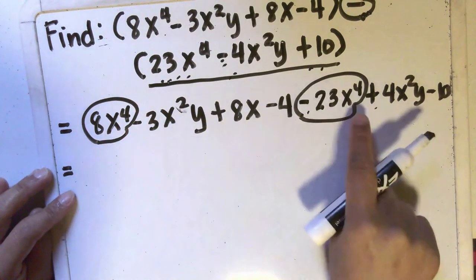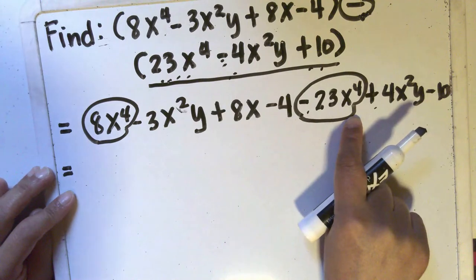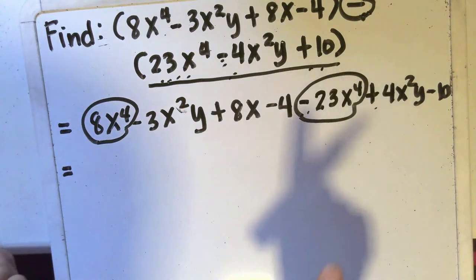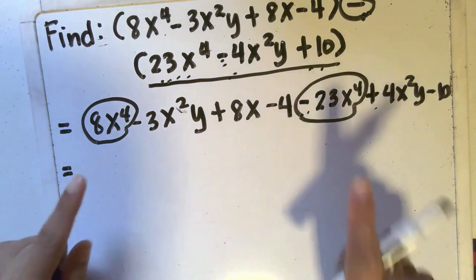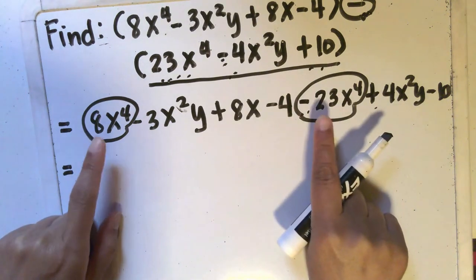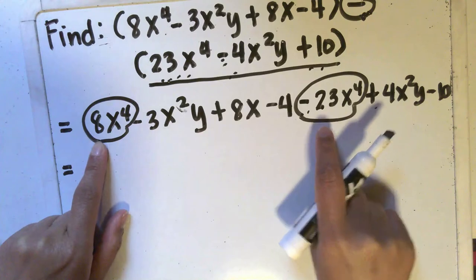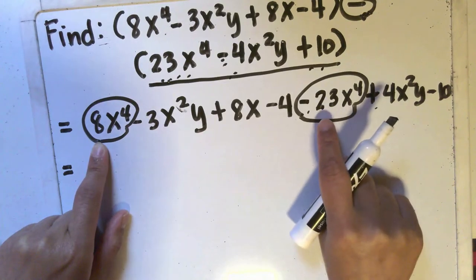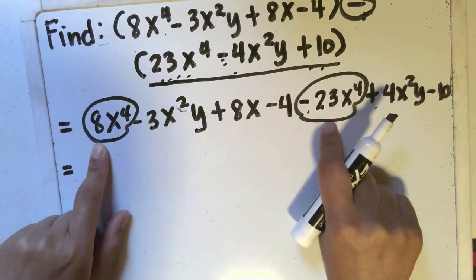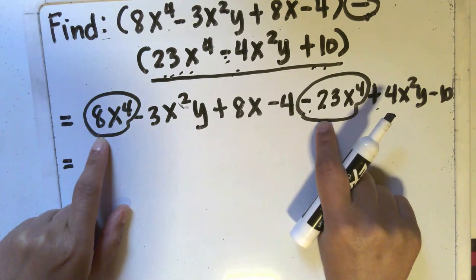Here, the variable is x to the 4th. Here, the variable is x to the 4th. Now think about the rules in combining integers with different signs because that's the same rule you will apply here. Positive 8 combined with negative 23, because the signs are different, you're going to subtract the absolute values of 8 and 23.